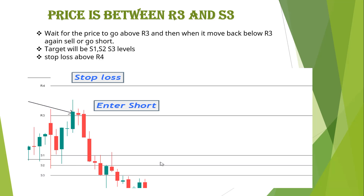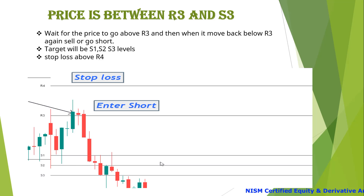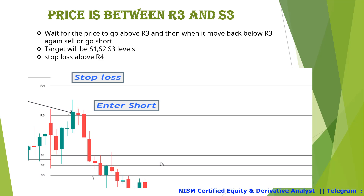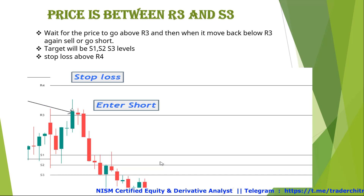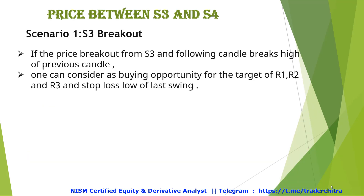For the short trade example, the price is between R3 and S3. We wait for the price to go above R3 — a green candle goes above R3 — and then it moves back below R3. We got a doji candle showing rejection from R3. That is where we enter the short trade. The target will be S1 as the first target, S2, and we trail profits till S3. Stop loss is at R4, or we can keep it at the latest swing high.